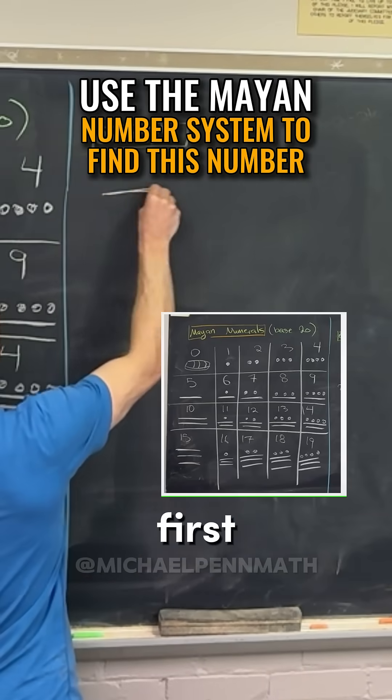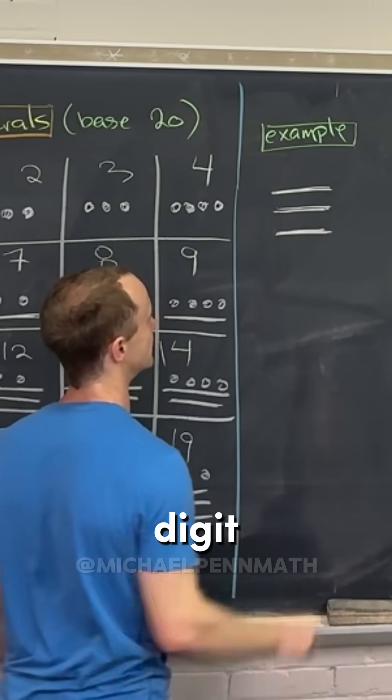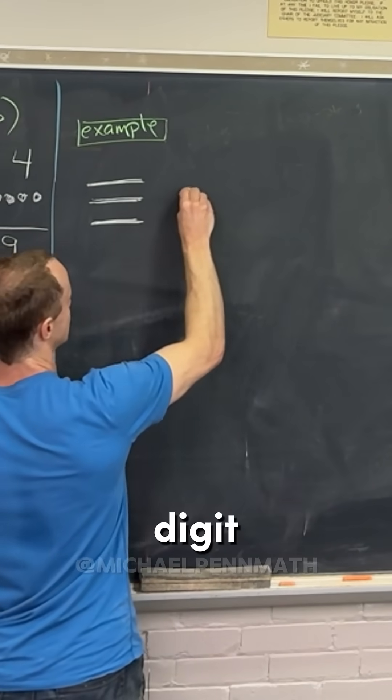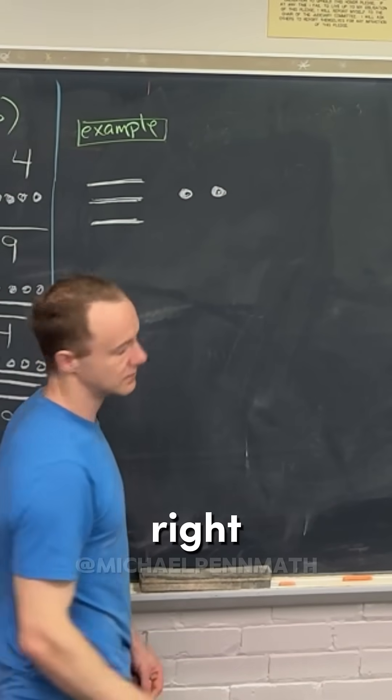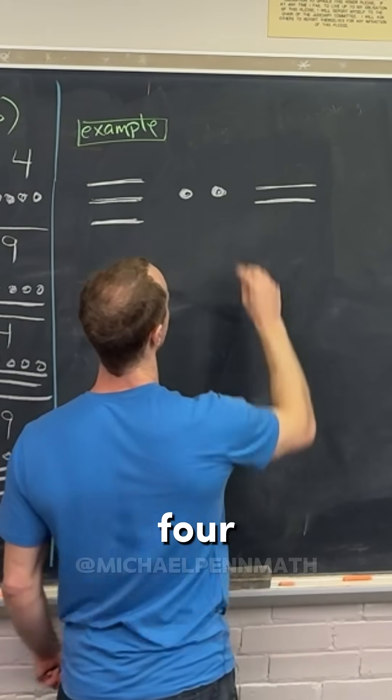Okay, so let's say our leftmost digit is three lines. Then our middle digit is two dots, and our rightmost digit is two lines and four dots.